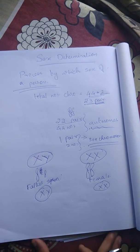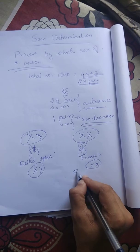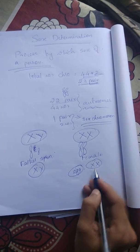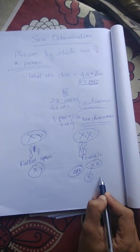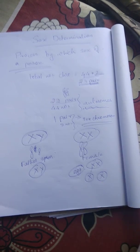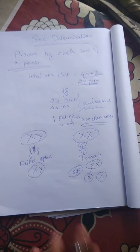The female egg gametes produce X chromosomes only. There is no other chromosome — only X.